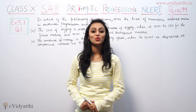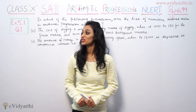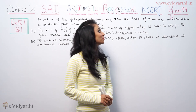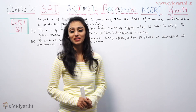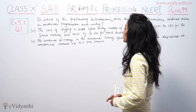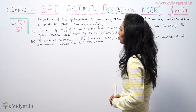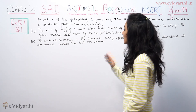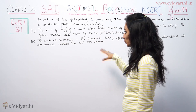Hey, what's up, this is Khushbu with another question on Arithmetic Progressions. This is Exercise 5.1, Question number 1, page number 99 from NCERT. This is part number 3, which asks: in which of the following situations does the list of numbers involved form an Arithmetic Progression, and why?